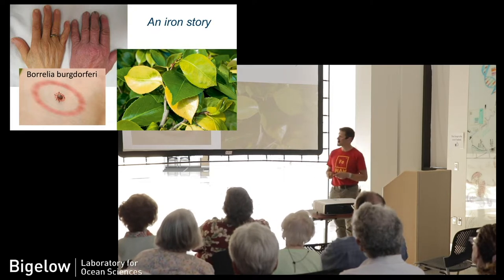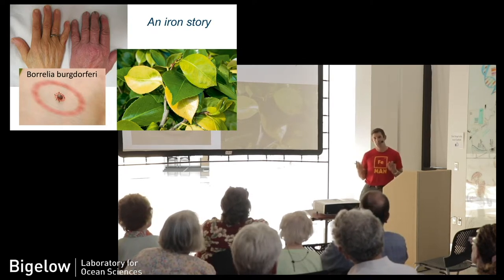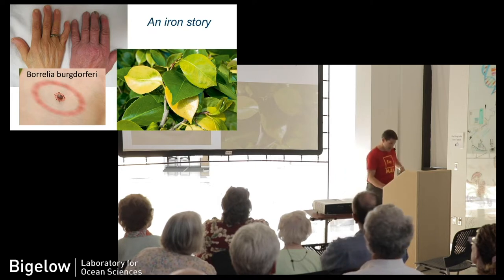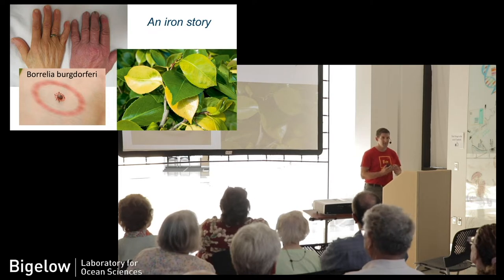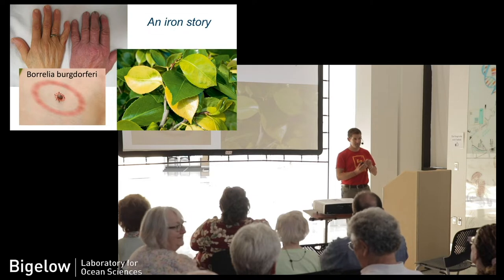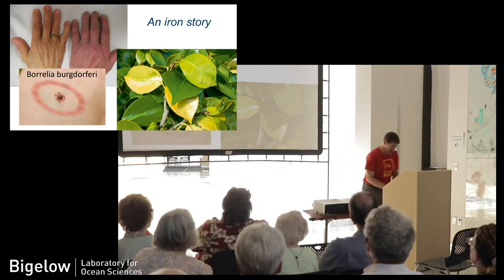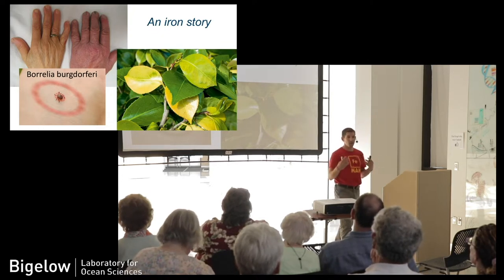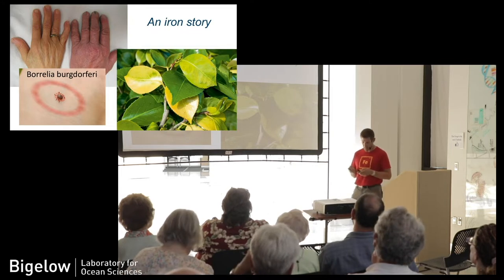The bacteria Borrelia burgdorferi was shown both first through its genome and then through measurements that it doesn't require iron. It replaces the iron-requiring proteins with manganese-requiring ones. That's a way to deal with the fact that the human body, when it's trying to fight infections, tends to suck iron away from those organisms. So these sneaky little buggers have figured out a way around that.